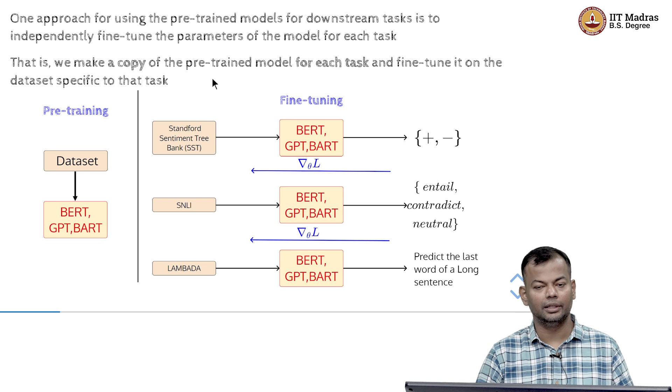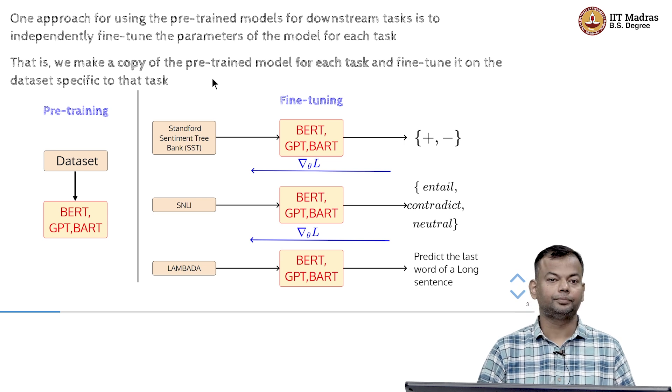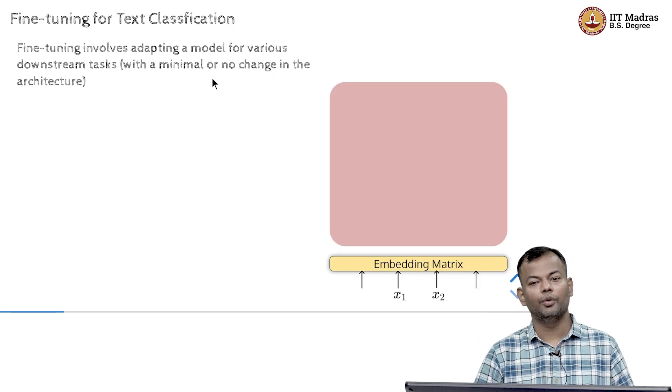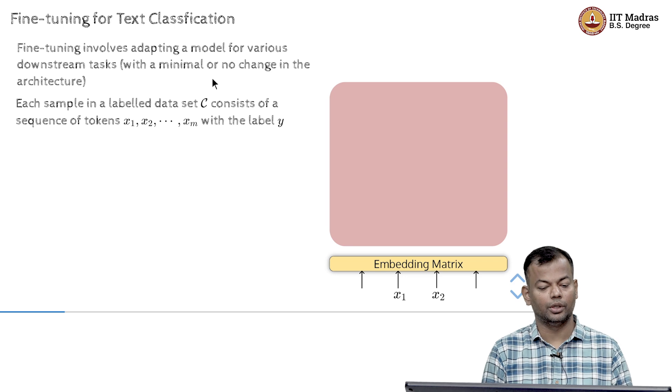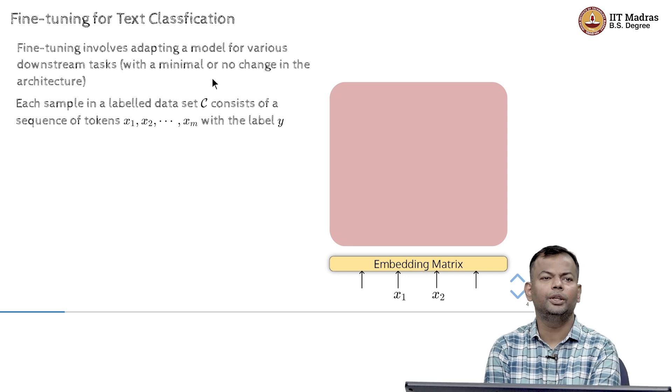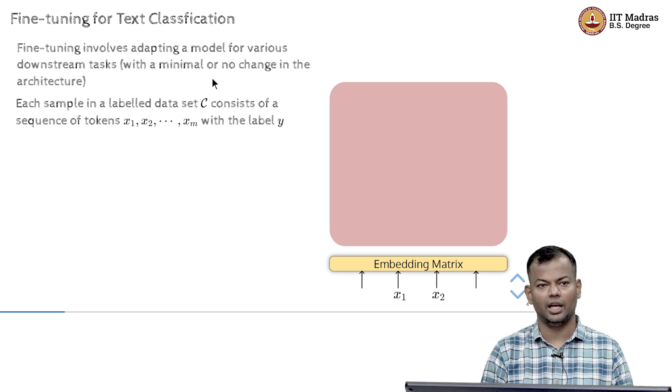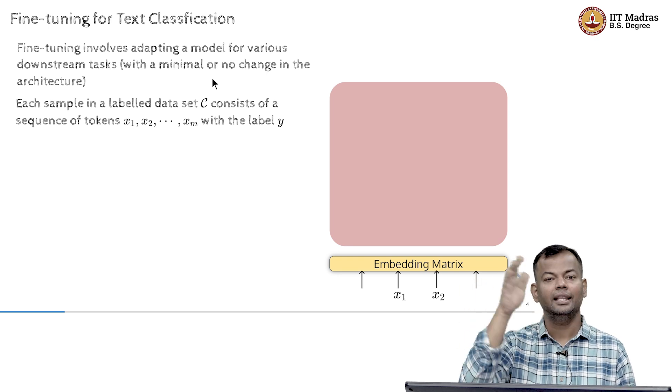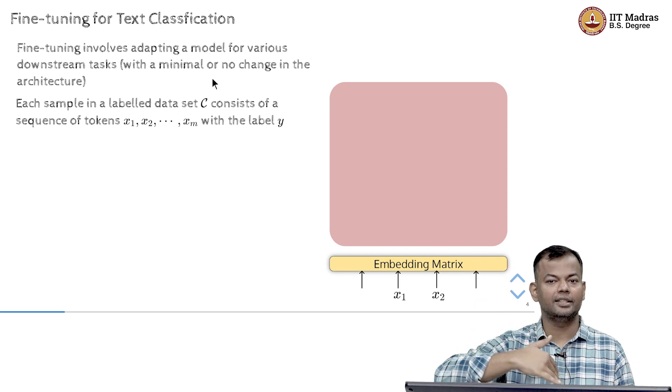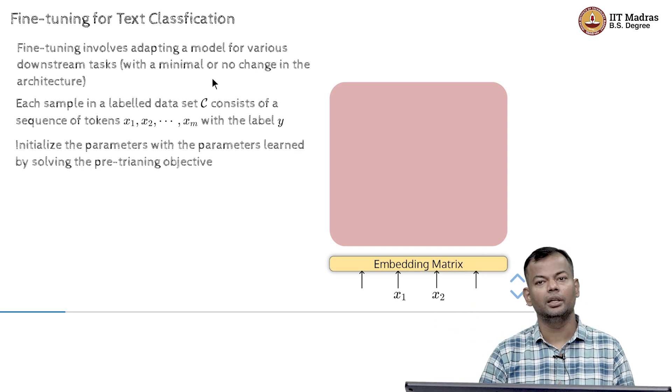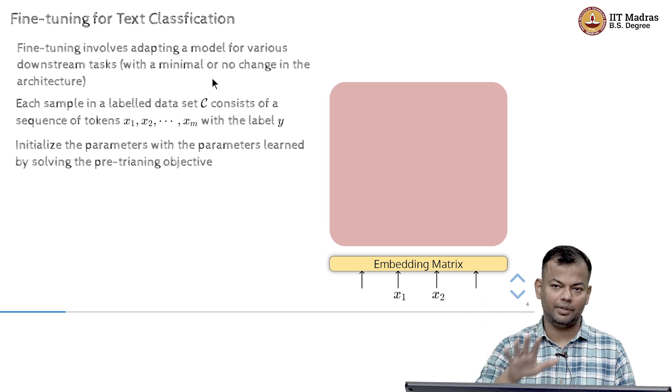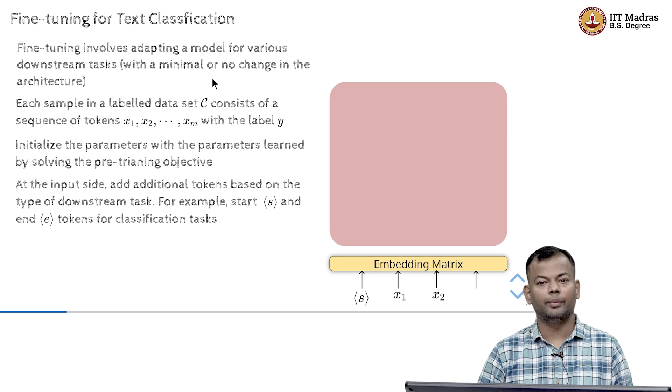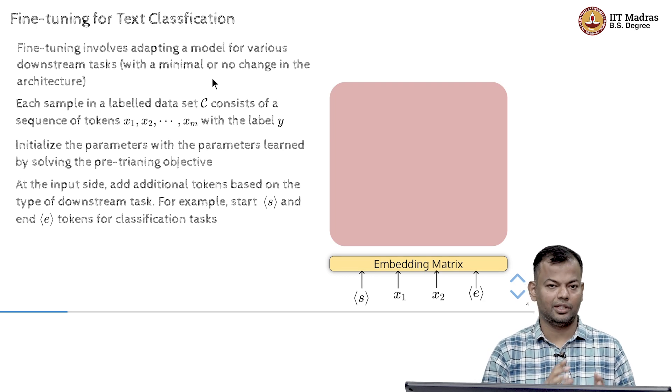And you could do this for multiple tasks. So, each time you will make a copy of the model and fine-tune it for that task. So, if you want to fine-tune for text classification, let's see what you would do. The goal would be to do this with minimal or no change in the architecture. So, in your corpus of your labeled data, you have a sequence of tokens and then a label Y associated with it.